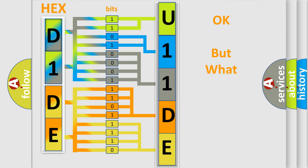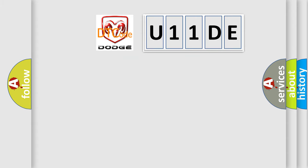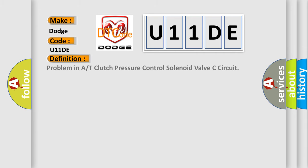We now know in what way the diagnostic tool translates the received information into a more comprehensible format. The number itself does not make sense to us if we cannot assign information about what it actually expresses. So, what does the diagnostic trouble code U11DE interpret specifically for Dodge car manufacturers?